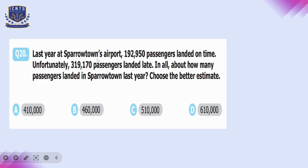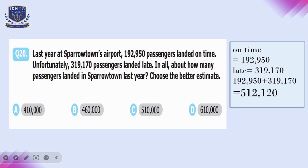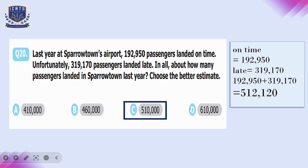Question number twenty: last year, 192,950 passengers landed on time and 319,170 passengers landed late. Adding these gives a total of 512,120 passengers. The best estimate is 510,000, which is closest to the actual value. So option C is correct.